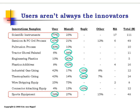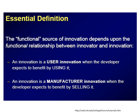This is a very important finding in the history of economics and management, as it has generated a new approach to innovation. A user innovation is classified as such when the developer expects to benefit by using the product or service being developed. An innovation is classified as a manufacturing innovation if the developer expects to benefit by selling it. The producer innovator clearly overlaps with manufacturer innovation.